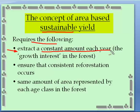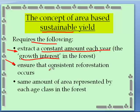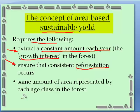If this is going to work, we must ensure constant, consistent reforestation. Please note the word reforestation — too many in the public think reforestation equals planting. That's not the case. Reforestation means returning a harvested area back to a quality forest. That could be natural seeding, aerial seeding, planting, and so on. We also have to make sure the same amount of area is represented by each age class in the forest.